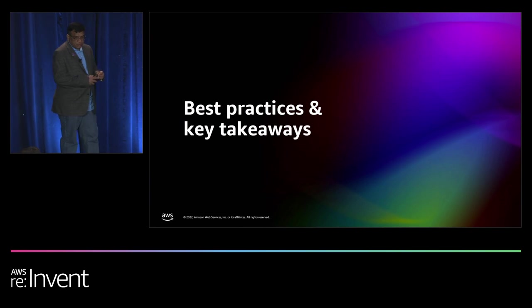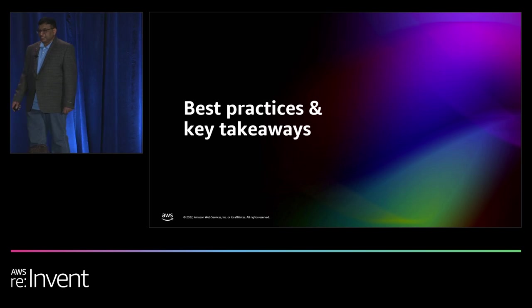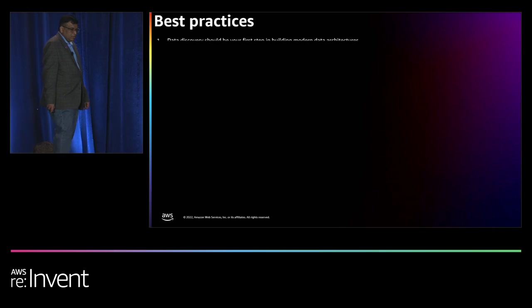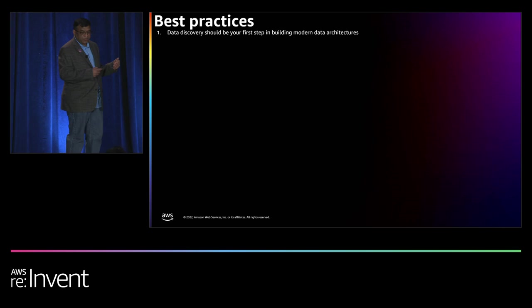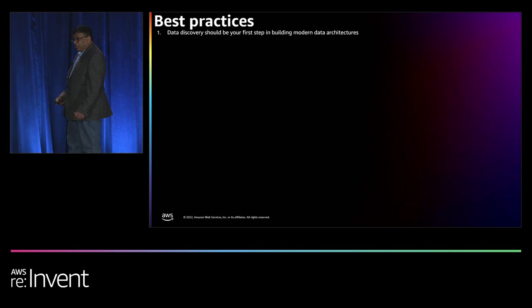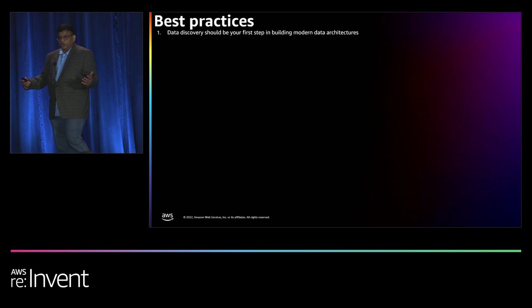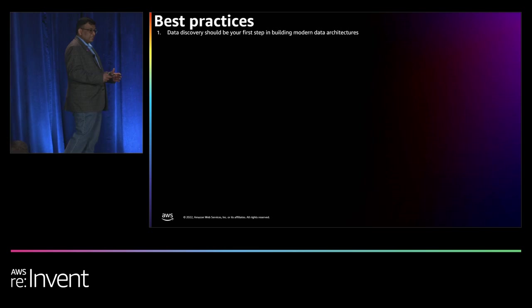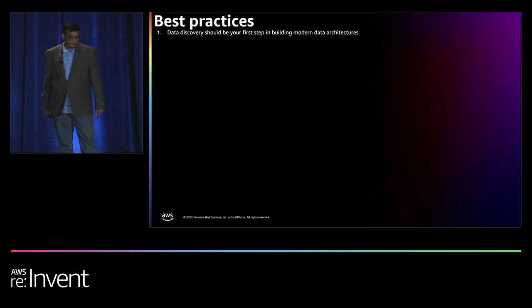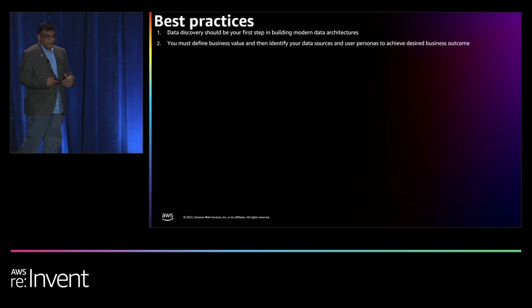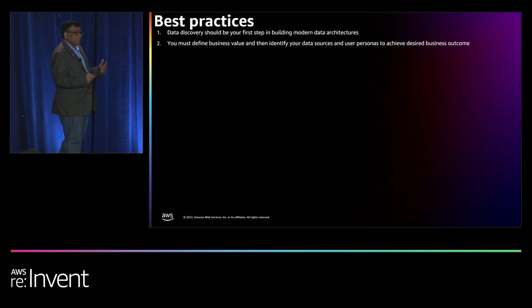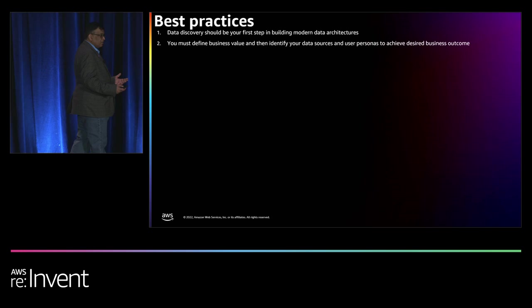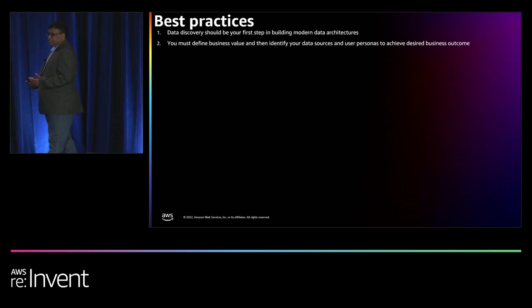Let us talk about best practices and key takeaways from this session. Data discovery should be your first step in building modern data architecture. If you want to learn more about how to perform data discovery, please refer to the AWS Well-Architected Lens data analytics section. You must define business value and then identify your data sources and user personas to achieve the desired outcome. You need to have a business outcome, goal, or objectives to build a modern data architecture — always tie back your modern data architectures to your business outcome.